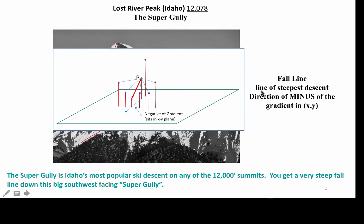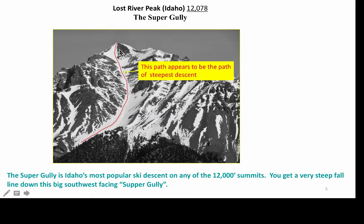The fall line is the line of steepest descent, and it's in the direction of minus the gradient in the XY plane. This path appears to be the path of steepest descent, and if you were to deviate from that path for this particular gully, it looks like you'd be in trouble — you'd be starting to hit rocks. So the snow in this particular case is in the gully, as you might expect.